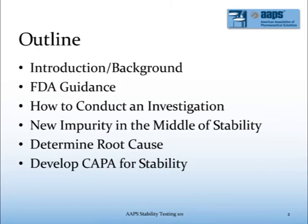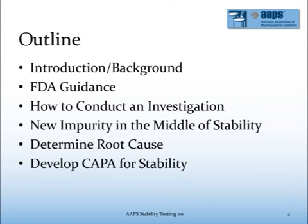In this session, I'll address the following. I'll provide an introduction and some background information related to out-of-spec investigations and discuss how the FDA guidance came to be. I'll review how to conduct an out-of-spec investigation and the steps to take when a new impurity is discovered in the middle of a stability study. I'll provide some tips on how to determine root cause, and finally, I'll discuss when to consider opening a CAPA for stability.